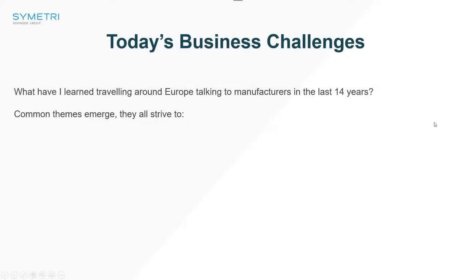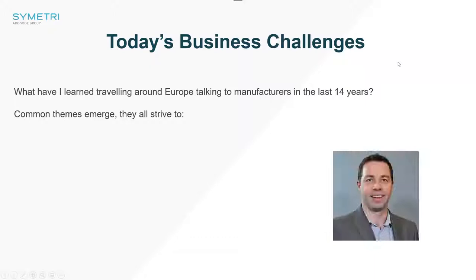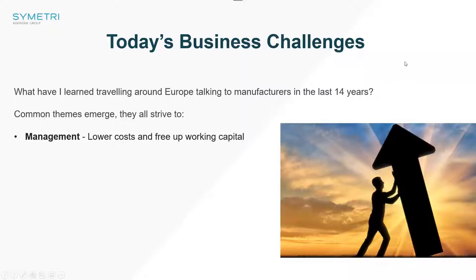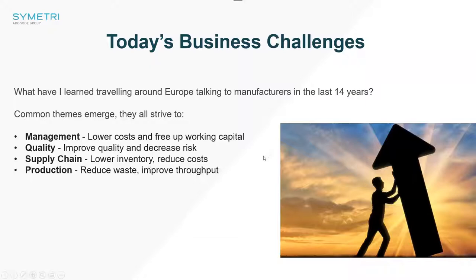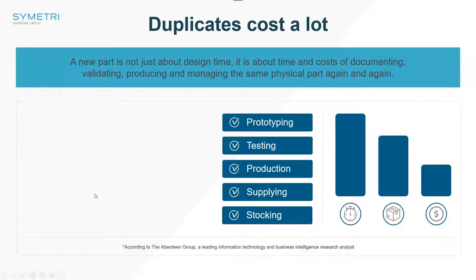I want to talk about today's business challenges before we get into this too deeply. I moved to the UK 14 years ago, and I've been traveling up and down around Europe talking to manufacturers like you, and some common themes seem to emerge. Management teams all want to lower cost and free up working capital. Quality departments all want to improve quality and decrease risk. Supply chain all want to lower their inventory and reduce costs. Production teams all want to reduce waste and improve their throughput.